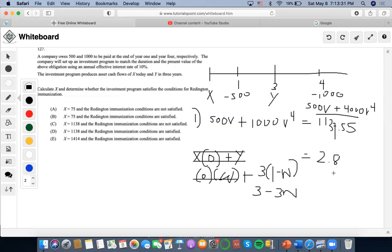I'm going to do 2.8 minus 3 divided by negative 3, and then W is going to be 0.6666, which means that 0.6666 would be the weight of asset one, which is X. So to find that, I'm going to take the present value of the liability, 1137.55 times 0.6666, and I find that X has a value of 75.76.